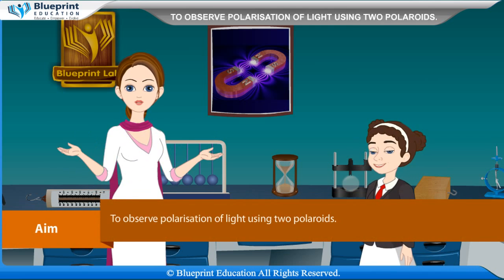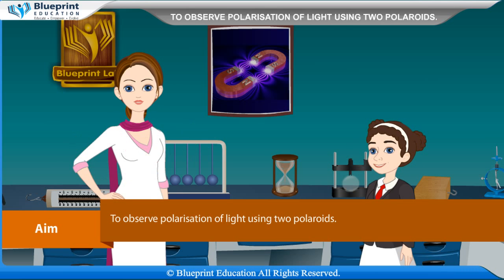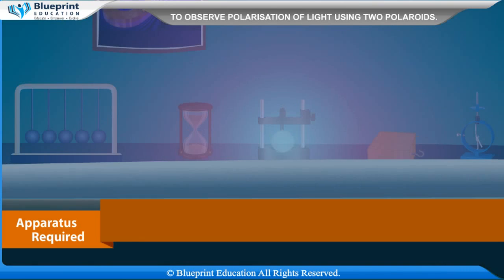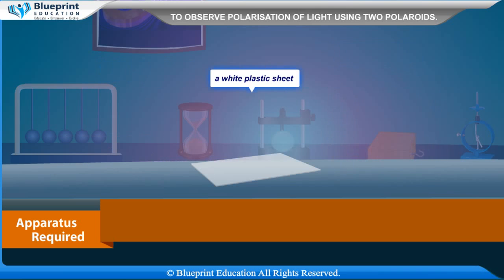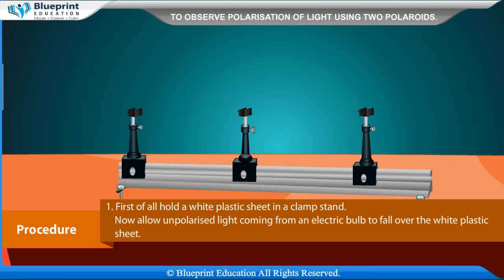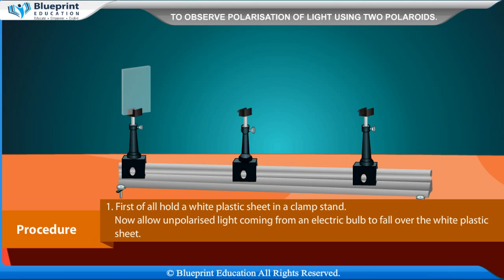Our aim is to observe polarization of light using two polaroids. Apparatus required: two polaroids, an electric lamp, and a white plastic sheet. Procedure: First of all, hold a white plastic sheet in a clamp stand.